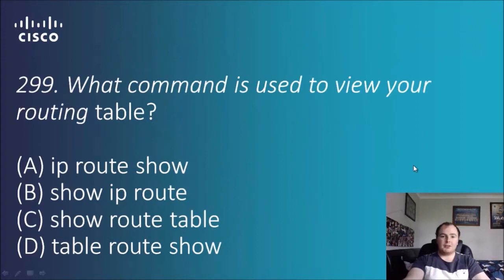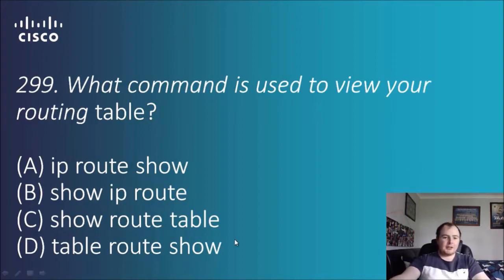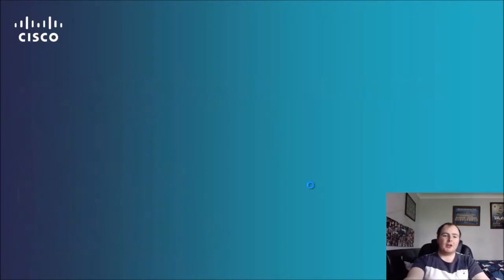What command is used to view your routing table? The options are: IP route show, show IP route, show route table, or table route show. Generally they have 'show' at the front, so I've eliminated two of those. The answer is B: show IP route.